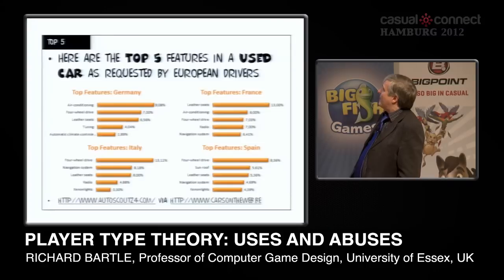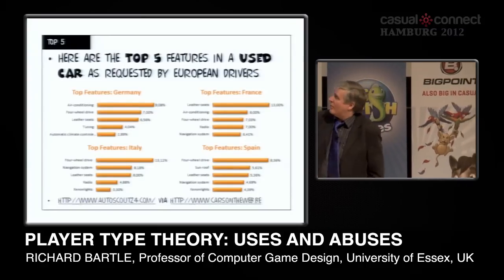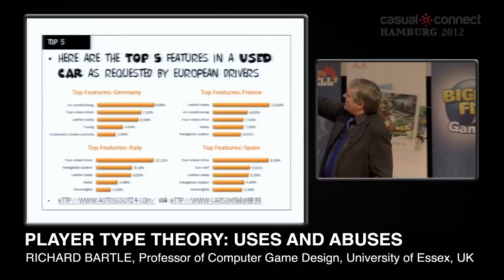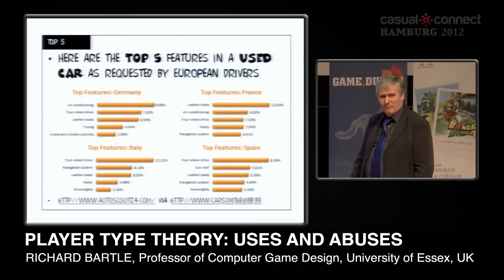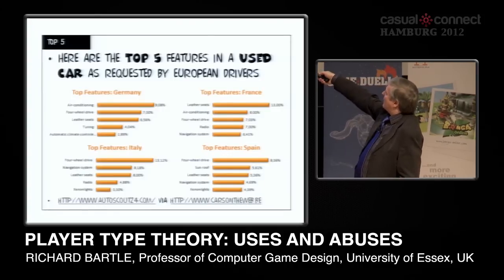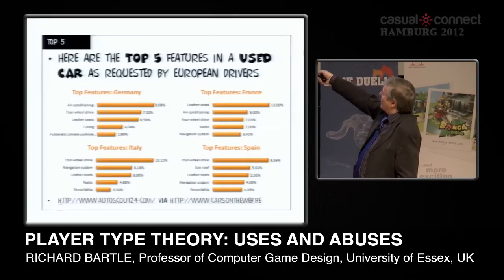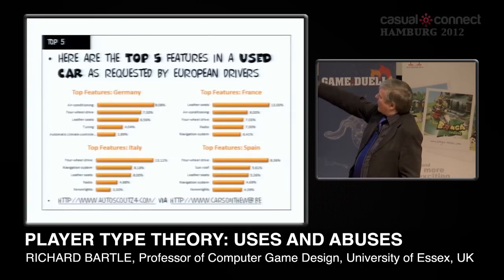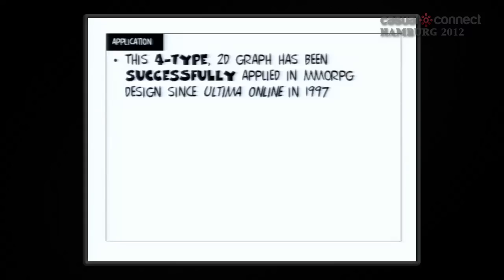Here are the top five features in used cars as requested by European drivers. In Germany, they all want air conditioning — probably to do with the weather. In Spain, they want four-wheel drive followed by a sunroof. In Italy, four-wheel drive followed by a navigation system. Of course, you might get lost a lot in Italy.